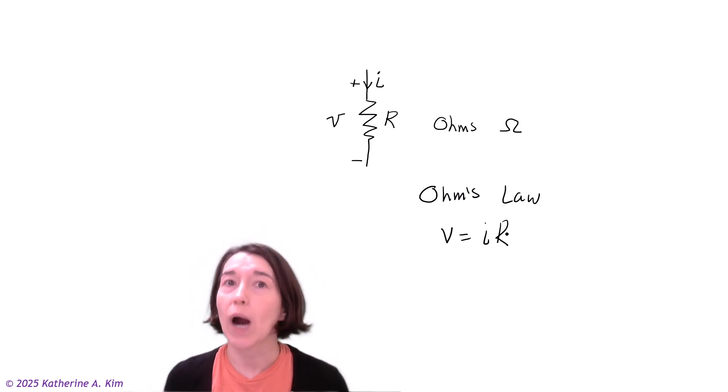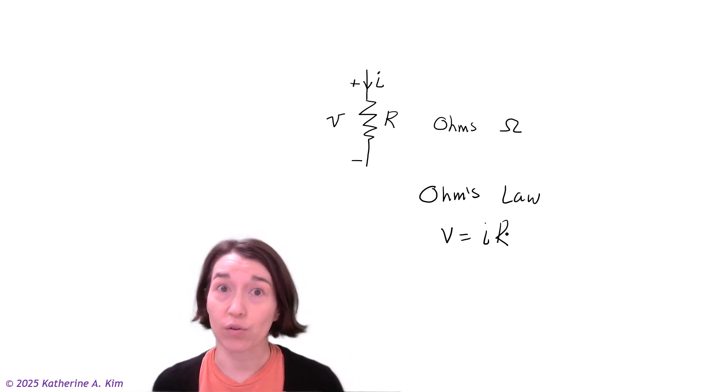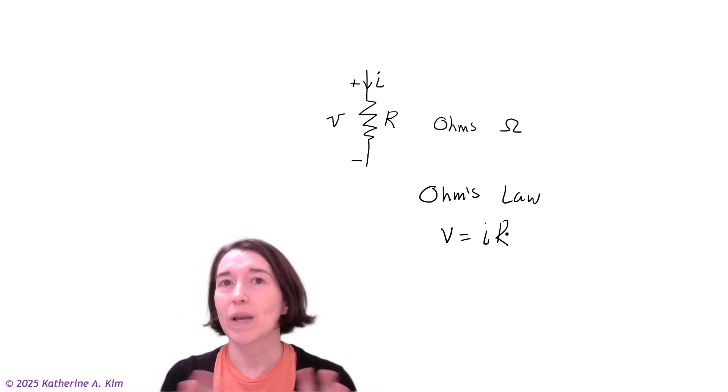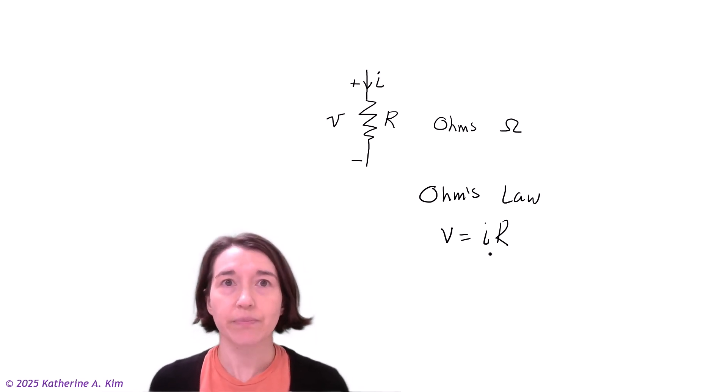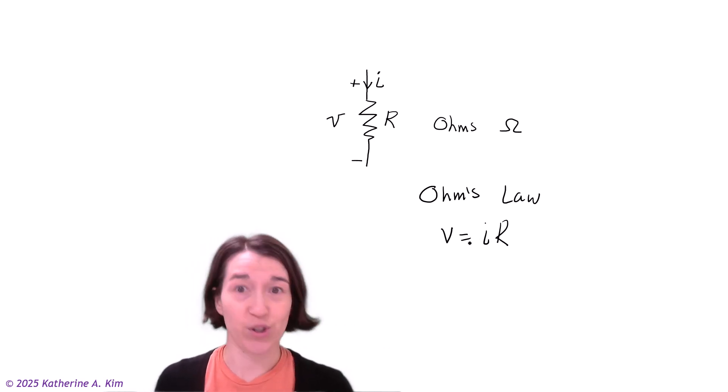Resistance is a property of the material. Certain materials are more resistive and don't let current flow through as easily with a given voltage. Based on the material, we determine the resistance value R. Then we use Ohm's law for circuit analysis to figure out the voltage and current based on that resistance.